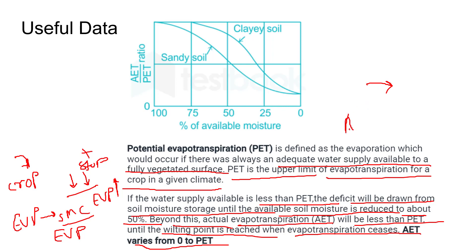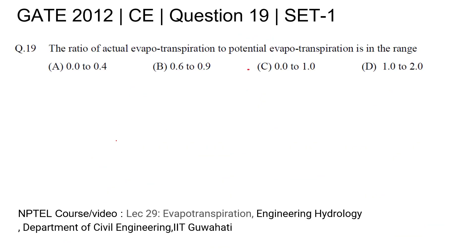In actual conditions we do not provide continuous water, so the actual evapotranspiration will be less than PET. Therefore, the answer to this question is option C: 0 to 1.